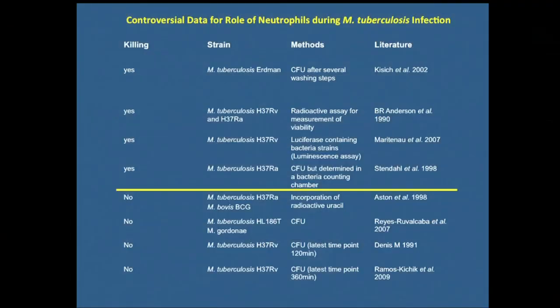When we further looked into the literature and wanted to find out what the actual interaction is between the bacteria and the cells, it seemed to be very controversial. If you ask the simple question — can neutrophils kill the bacteria in vitro — and look only at human cells, you find as many papers suggesting they can kill the bacteria as papers showing they can't. So just looking at this question, it seems very controversial, as does looking at other aspects of neutrophils.